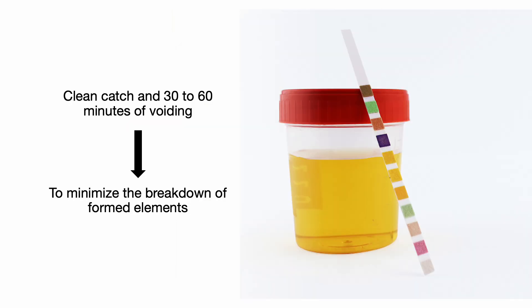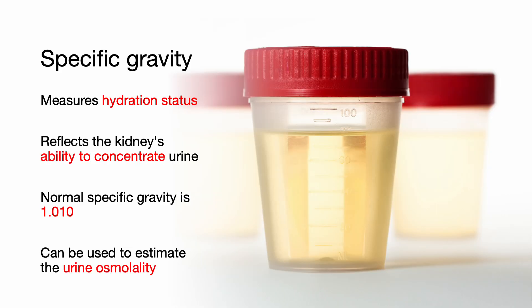The sample is best collected without contamination, which requires a clean catch, and examined within 30 to 60 minutes of voiding in order to minimize the breakdown of formed elements. Specific gravity measures hydration status and reflects the kidney's ability to concentrate urine. Normal specific gravity of urine is about 1.010, and this can be used to estimate the urine osmolality.